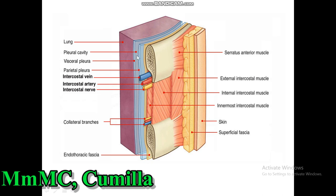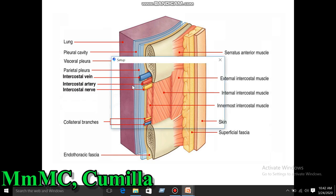The contents of the intercostal space include muscles: the external intercostal muscle, internal intercostal muscle, and innermost intercostal muscle. The vessels are the intercostal vein and intercostal artery, and the nerve is the intercostal nerve.